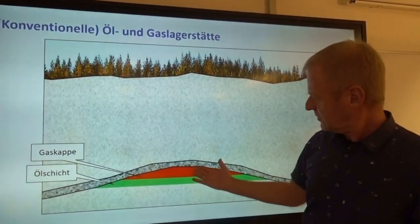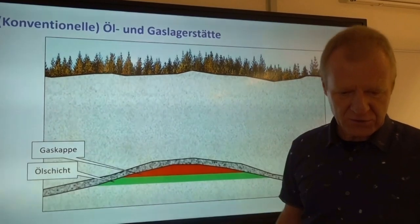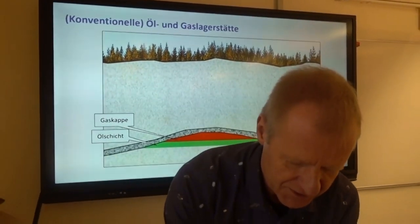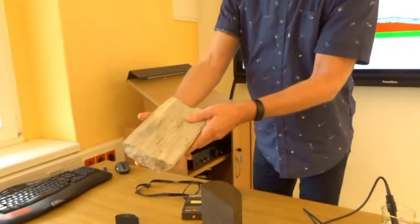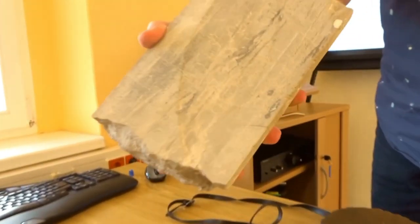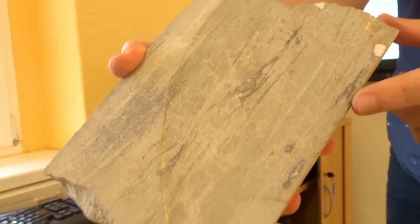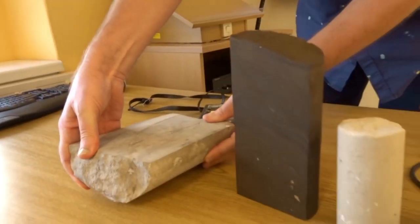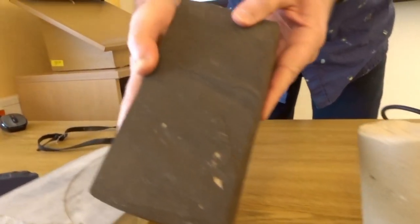Oil and gas are in the microscopic pores of the rock. The gas is contained in such rocks — it's only under a microscope that you can see the pores. And underneath, in the oil layer, it looks like this. So this is the rock in whose pores the oil is located.